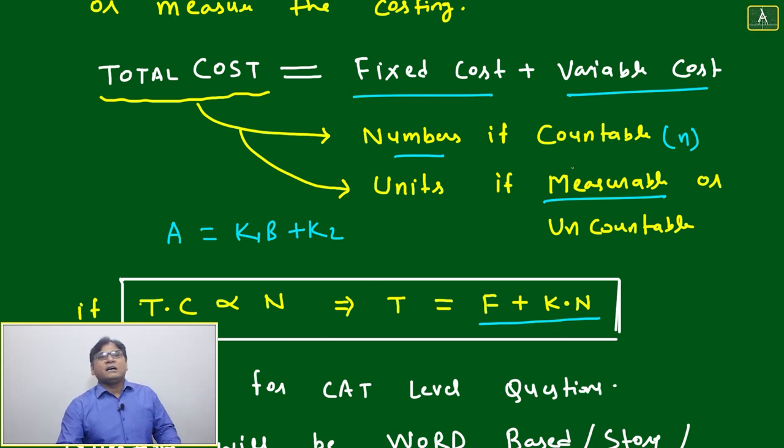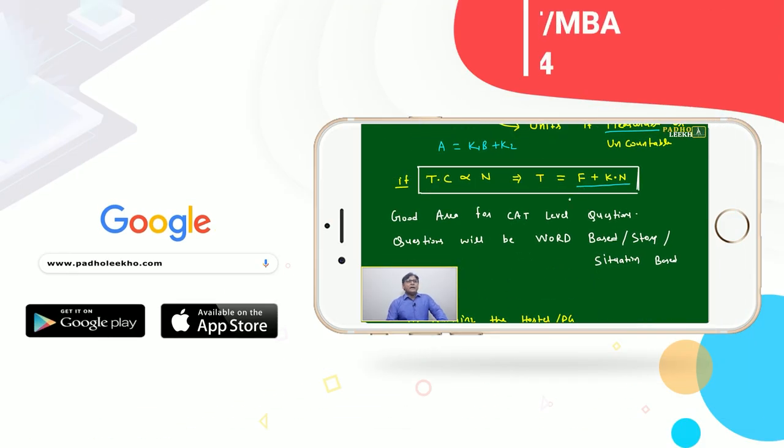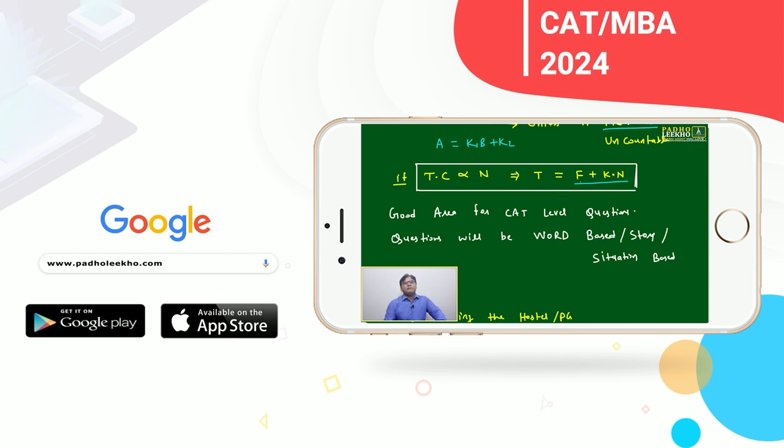Whatever will be given, then total cost you can write F plus K into N. F is fixed cost plus K into N—it will become variable cost. Correct.